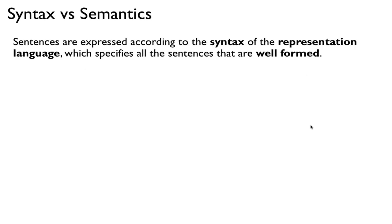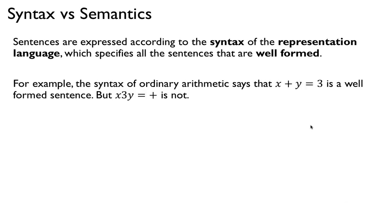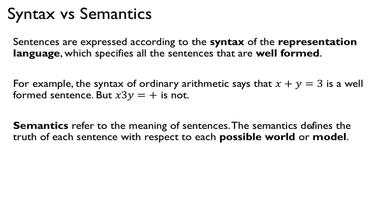Let's talk about syntax versus semantics. Sentences are expressed according to the syntax of the representation language, which specifies all the sentences that are well-formed. In ordinary arithmetic, we know basic syntax. For example, 'x plus y is 3' is a well-formed sentence that satisfies the syntax of basic math. But something like 'x3y equal plus' is not a well-formed sentence. So syntax is basically the form of the language.